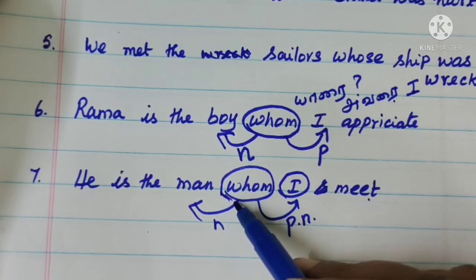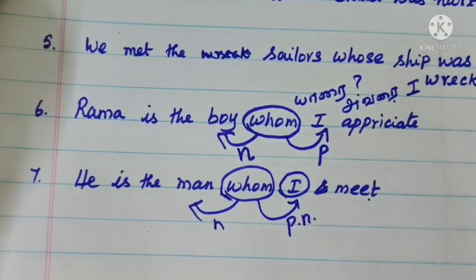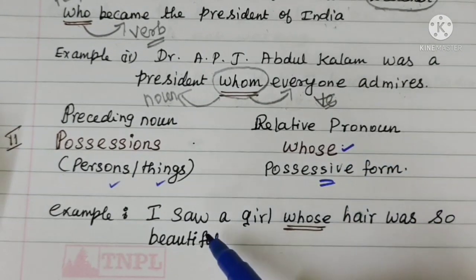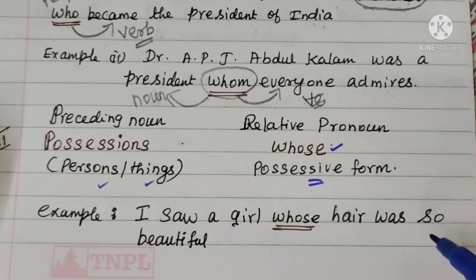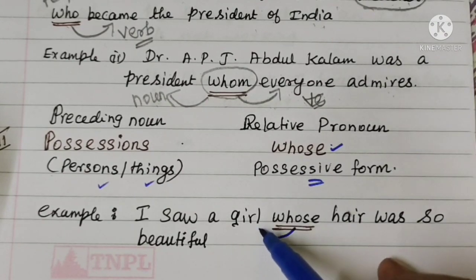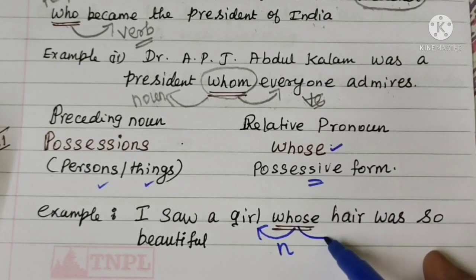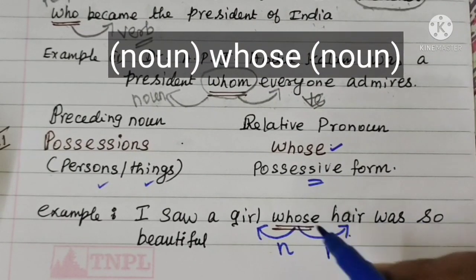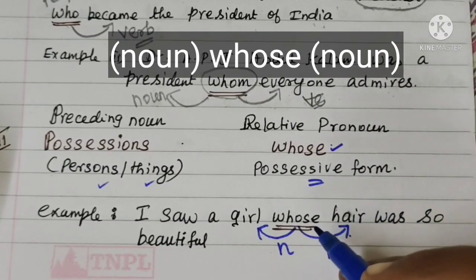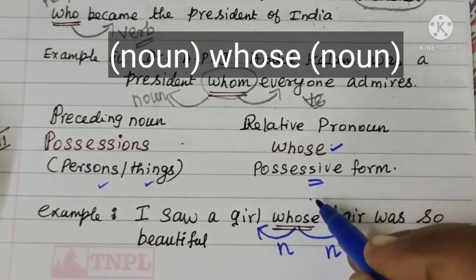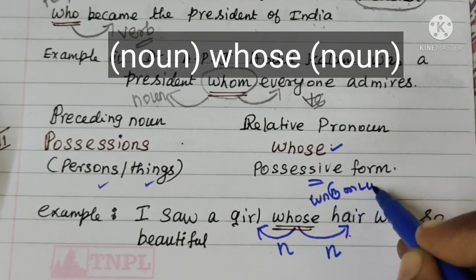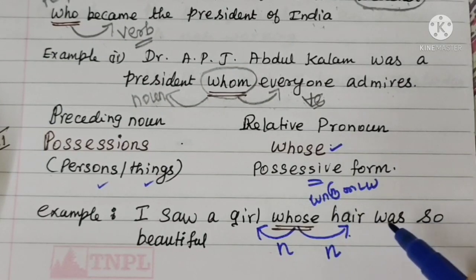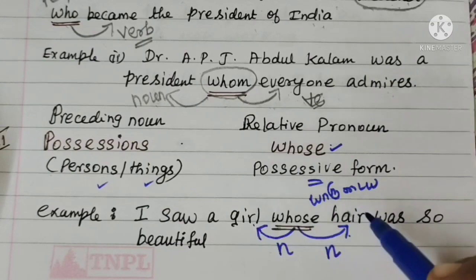The next relative pronoun is 'whose'. The preceding noun is a person, and then the relative pronoun 'whose' is used. Example: I saw a girl whose hair was so beautiful, so soft. Here 'girl' is the noun and 'whose' refers to the girl's hair.